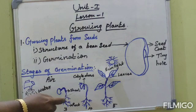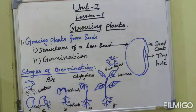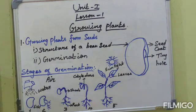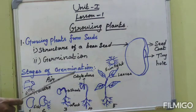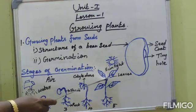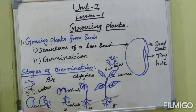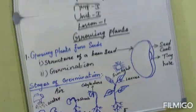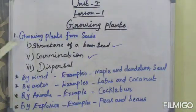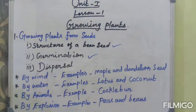The cotyledon shrinks and disappears. Cotyledon means the part of a seed that stores food for the baby plant. These cotyledons shrink and disappear, and the new plant grows. Under this heading, the structure of a bean seed and germination are complete.